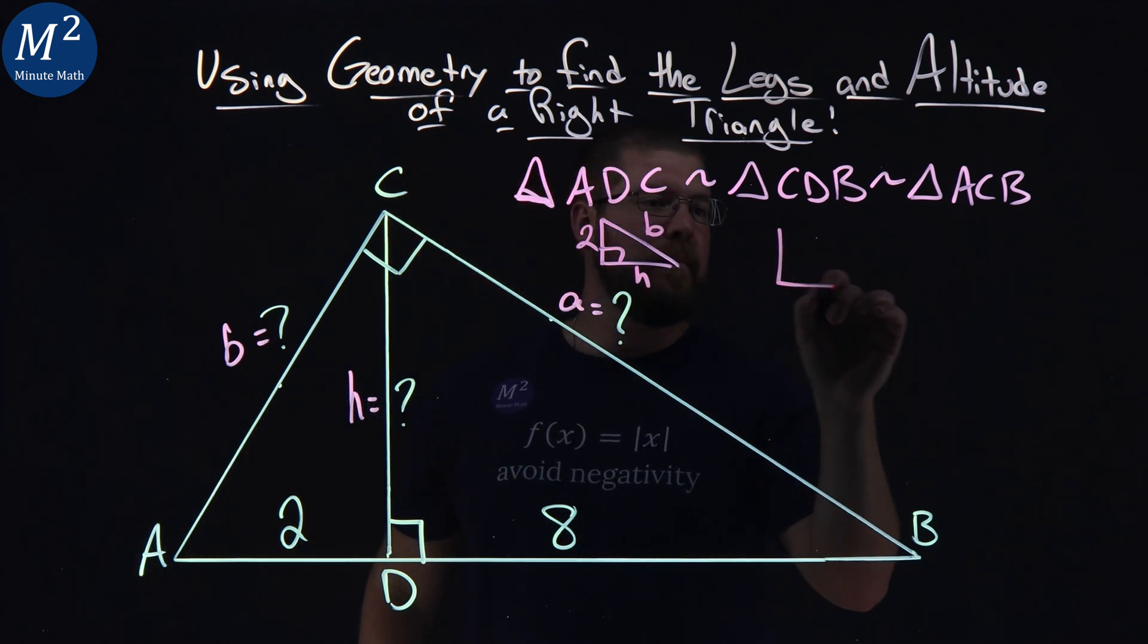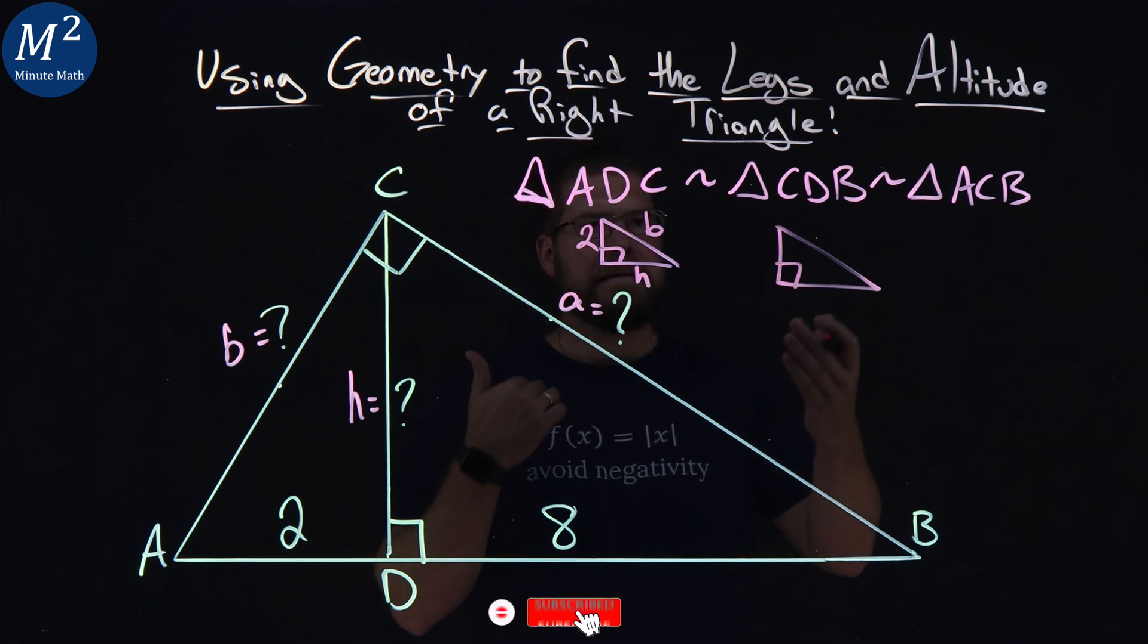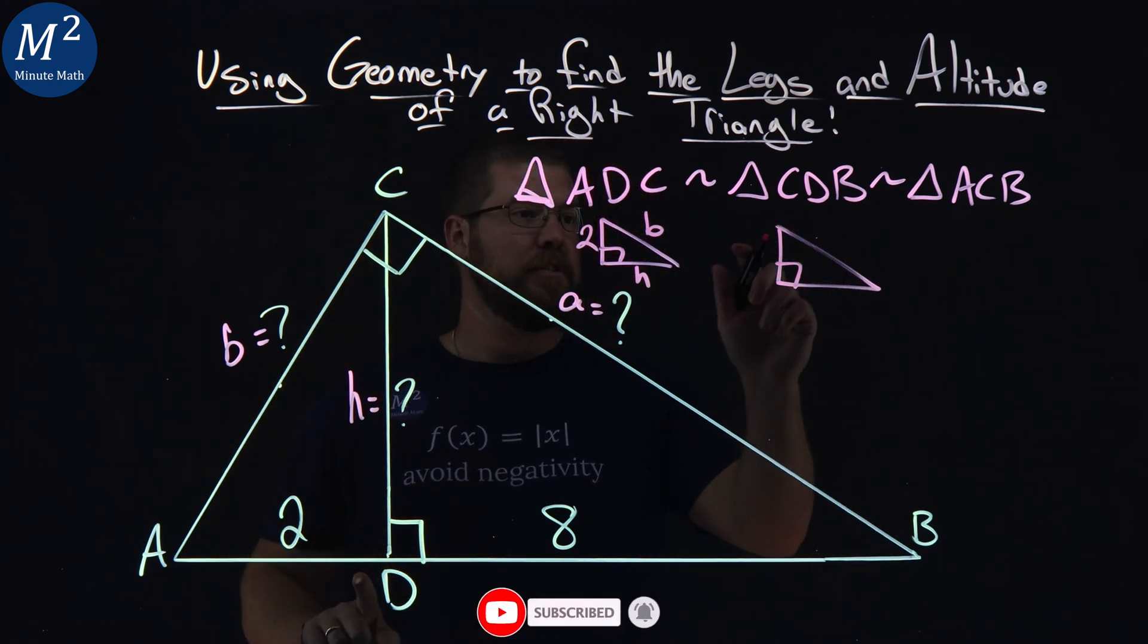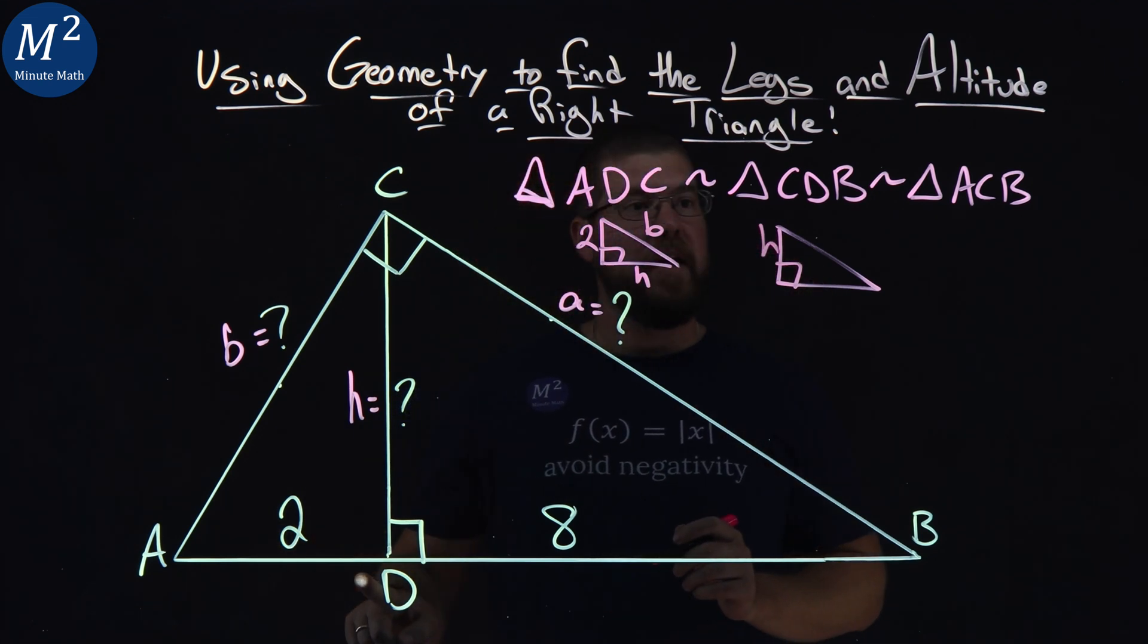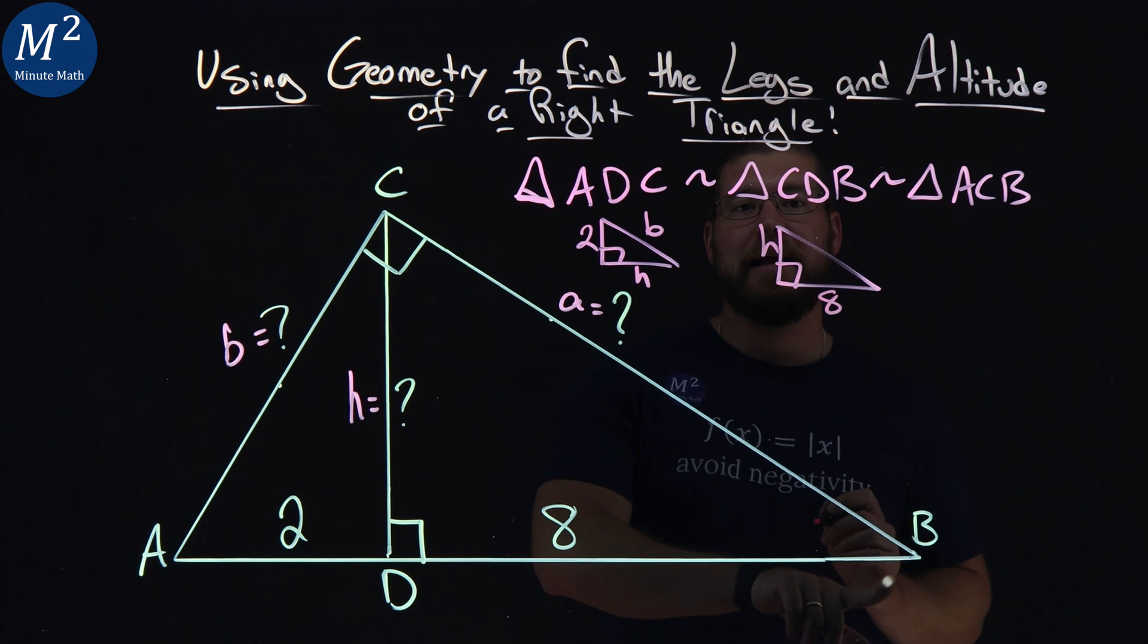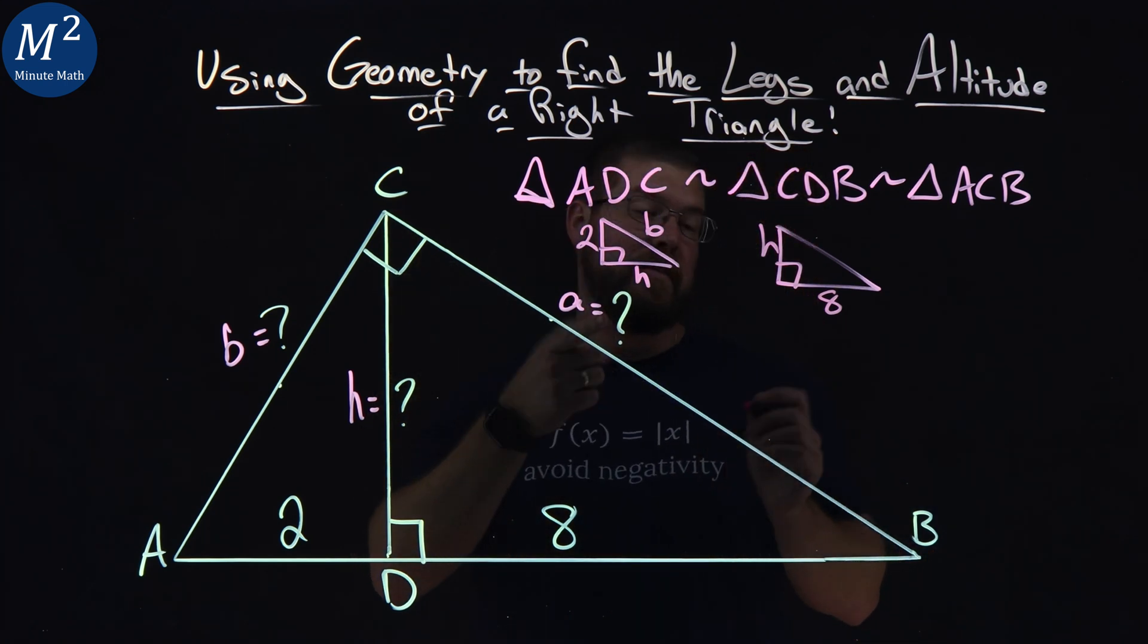The second one, same idea. Again, not drawn to scale, but in the same order. Little leg here is CD, the length CD, which is h. Then large leg DB, which is 8, which we know. And then the hypotenuse is ACB.